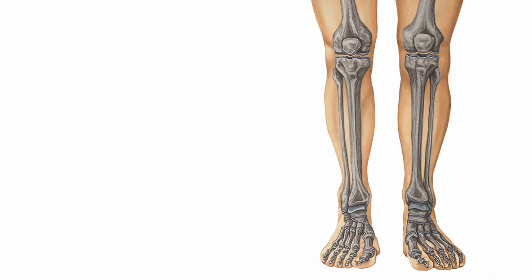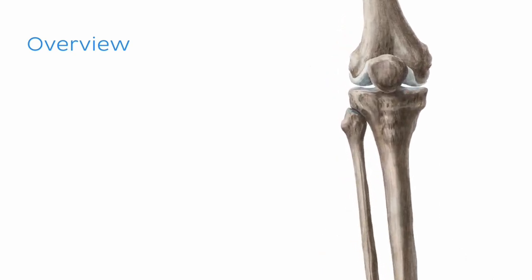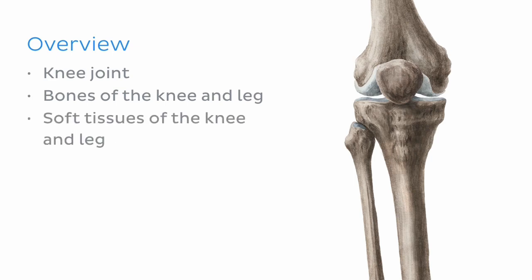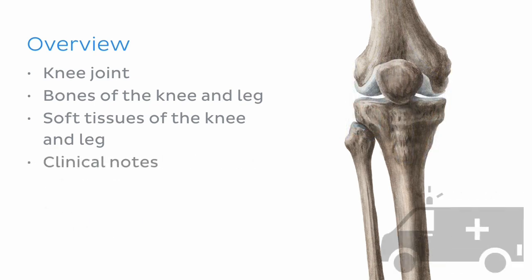Now that we've got the terminology down, here's a quick overview of what we're going to be talking about in this tutorial. First, I'm going to introduce you to the knee joint and the bones that form this joint. We'll then look at the bones of the knee and the leg, focusing on their bony features and muscle attachment points. Next, we'll talk about some soft tissues of the knee and the leg, including the capsule and retinacular, the menisci, the ligaments, and the bursae. Finally, we'll bring our tutorial to a close with some clinical notes about shin splints. So without further ado, let's get started with the knee joint.